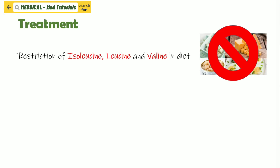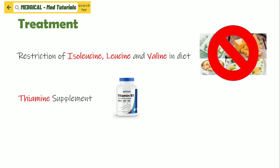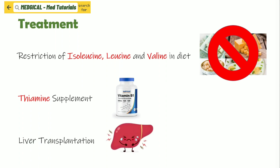Treatment of Maple Syrup Urine Disease consists of restriction of leucine, isoleucine, and valine in the diet of patients. We can also recommend patients to use thiamine supplements, also known as vitamin B1 supplements. If the disease gets really severe or serious, the patient might need to undergo liver transplantation.